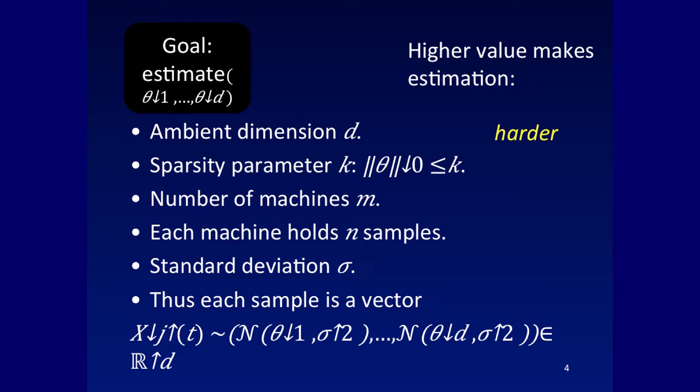What about sparsity? It's a promise, so it's just a logical fact — easier. What about the number of machines? That's a tricky one, without changing N. In the broadcast model, it's easier or the same. It's easier, though not strictly easier in the same sense as the other parameters, because you don't have to use all the machines.